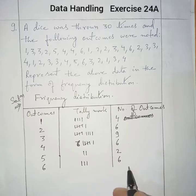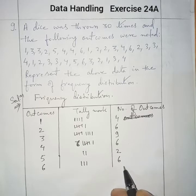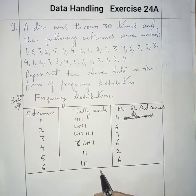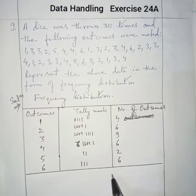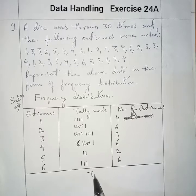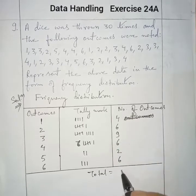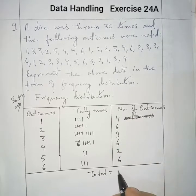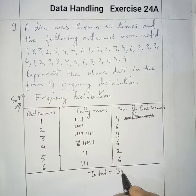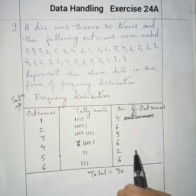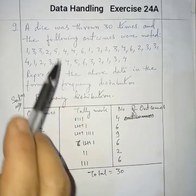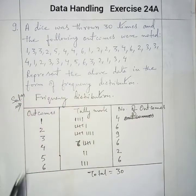The total will be 30, because the dice was thrown 30 times. We sum all the number of outcomes and we will get 30.